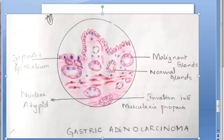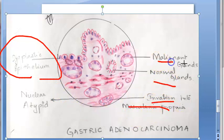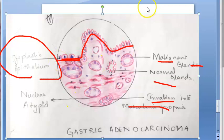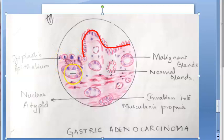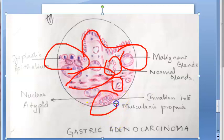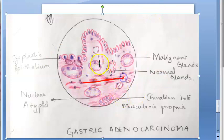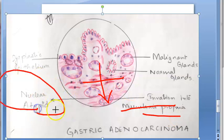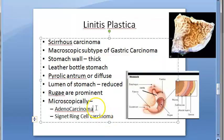In gastric adenocarcinoma you see dysplastic epithelium, nuclear atypia, and invasion into muscularis propria, as well as malignant glands. The epithelium is slowly becoming dysplastic — normal epithelium transitioning to dysplastic epithelium is visible. You can see malignant glands, blood vessels, the muscle layer, and invasion into the muscularis propria. Nuclear atypia is also visible. This is adenocarcinoma of the stomach.